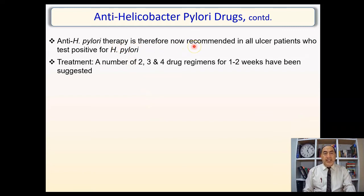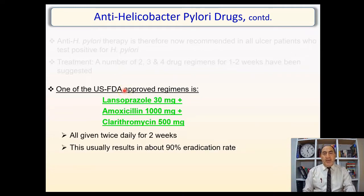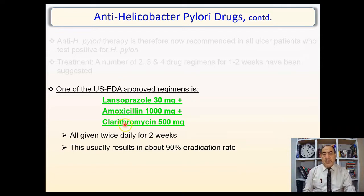Active H. pylori therapy is now recommended for ulcer patients who test positive for H. pylori. There are many treatment regimens; one of the most common and FDA-approved ones contains lansoprazole — a proton pump inhibitor — amoxicillin (a penicillin), and clarithromycin (a macrolide antibiotic). Proton pump inhibitors are used rather than H2 blockers because of their greater potency. The combination produces synergism: 1000 mg amoxicillin and clarithromycin twice daily for two weeks, achieving about 90% eradication rate.